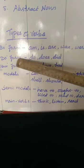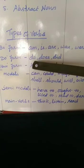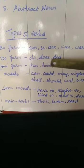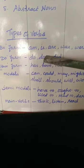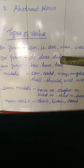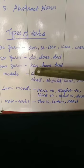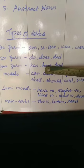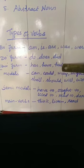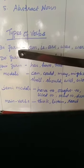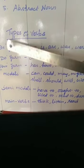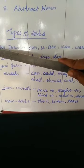Then we have do form verbs. We have three do form verbs: do, does, did. Do and does are used in present tense, whereas did is used in past tense. Then, have form verbs — like do form verbs, have form verbs also has three: has, have, had. Has and have are used in present tense and had is used in past tense. Be form verbs, do form verbs, and have form verbs together are called helping verbs.